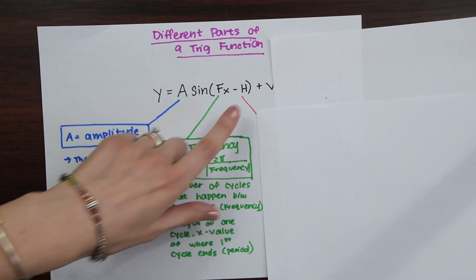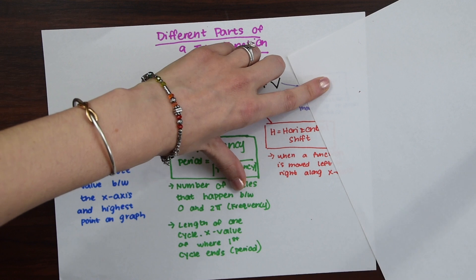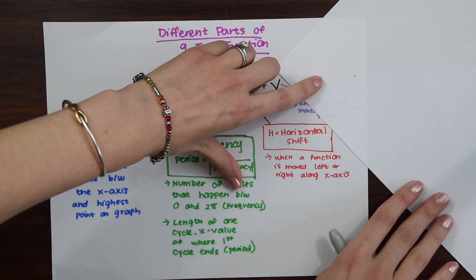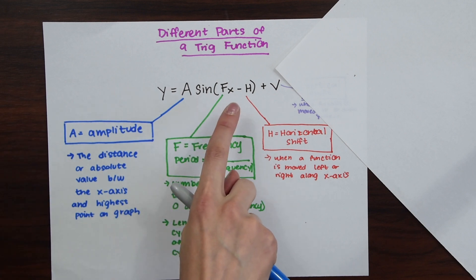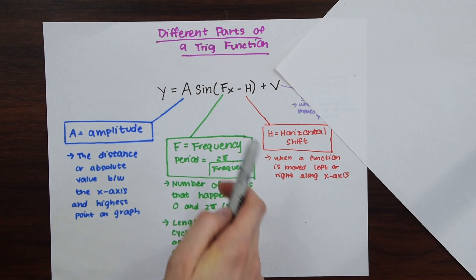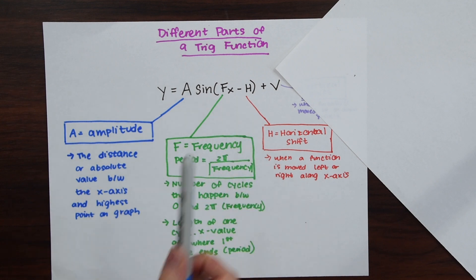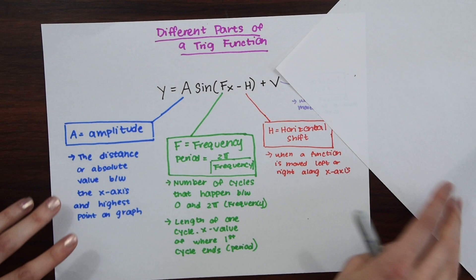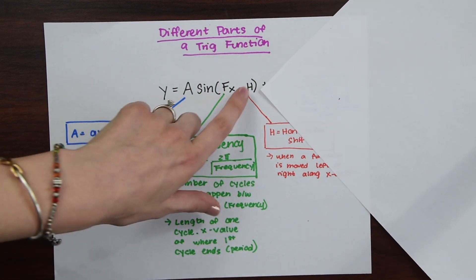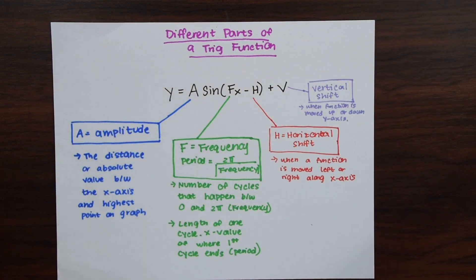Next we have the horizontal phase shift. All a horizontal phase shift does is move the entire function left or right along the x-axis. Notice we are subtracting in the formula, so whenever we have a plus sign — say plus π over 2 — that actually means we're moving to the left. It's always the opposite of what you might expect because of that subtraction in the formula. And the last part is the vertical shift, which just moves the entire function up or down along the y-axis.